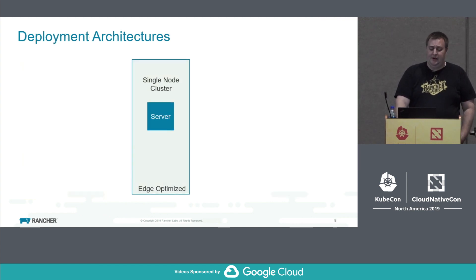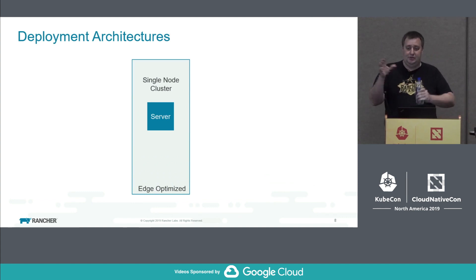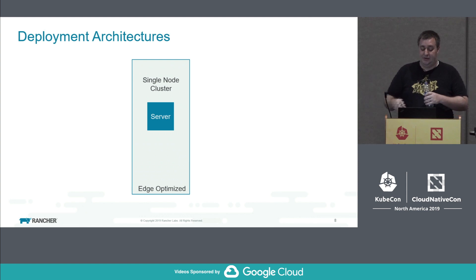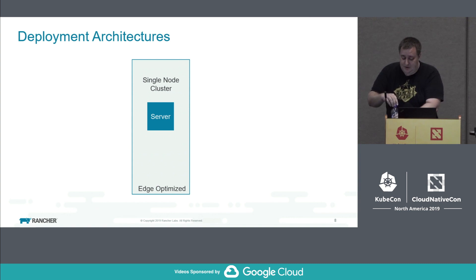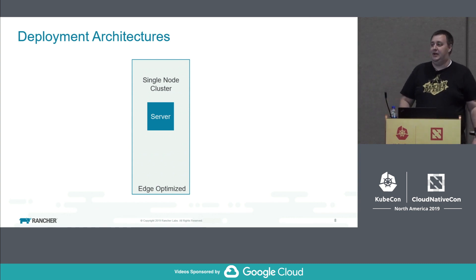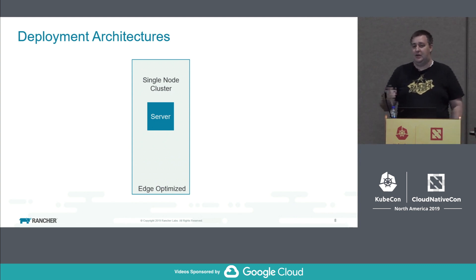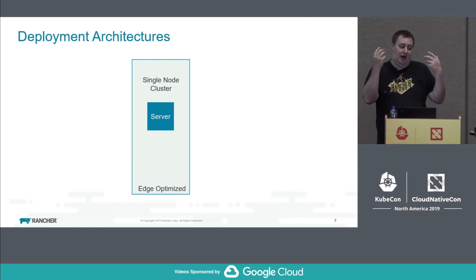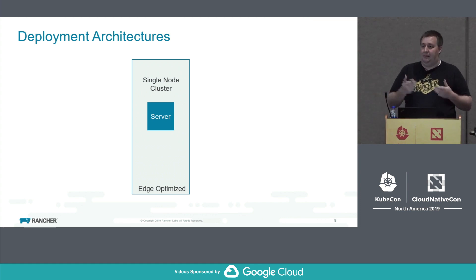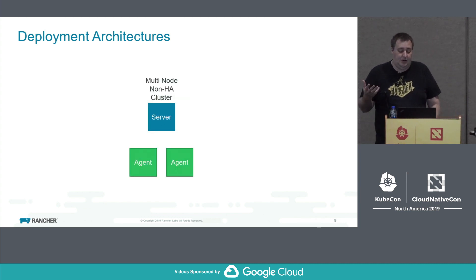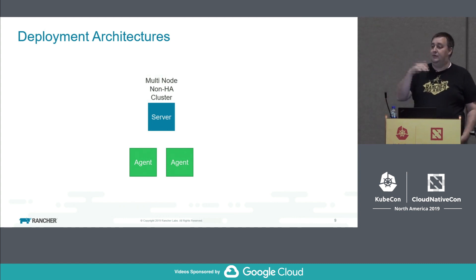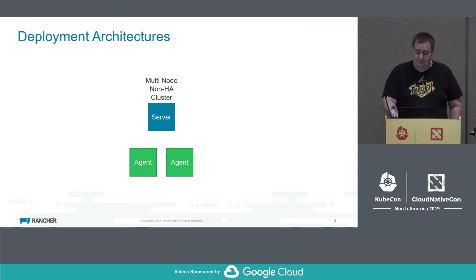When we get into deployment architectures, the simplest is just a single node — an edge-optimized case. People are using K3S in a lot of places running single-node clusters. There are many applications for just having one computer running Kubernetes. Then there's the multi-node non-HA cluster: one server, multiple agents.